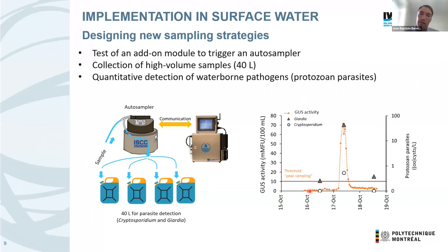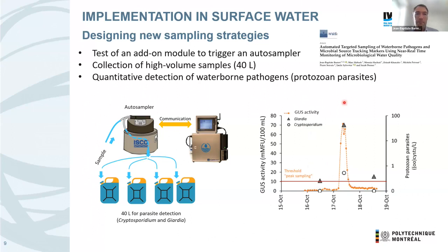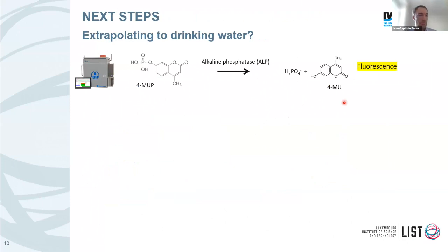One example: a sewage release caused by intense rainfall triggered an intermittent contamination event, shown by the glucuronidase activity. The triangles in gray — before, at peak, and after the event — show Giardia really increasing more than one, even two logs, during that specific contamination event at an urban beach. You can really see how with this high-resolution monitoring, you can target specific events that you would not be able to target otherwise.